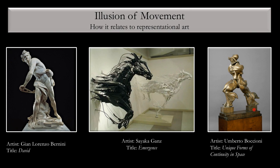If we look at the third piece on the right, we again get a good sense of movement as it relates to representational art. We see these diagonal lines — here's one, and even in the head, if you follow that line, it reads that way. There are a lot of diagonal lines, and again it gives us that sense of movement in representational artwork.